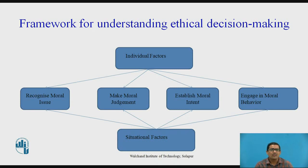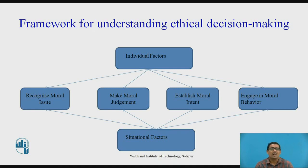This shows the framework for understanding ethical decision making. There are individual factors and situational factors, and these consist of four things helpful for taking a decision: recognize moral issue, make a moral judgment, establish moral intent, and engage in moral behavior. Individual factors affect each of the processes, and situational factors also affect each of these processes. This is the complex framework in which ethical decision making takes place, and individual factors as well as situational factors can be further classified into sub-factors and categories.